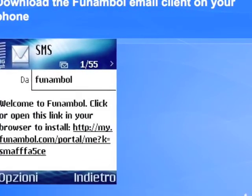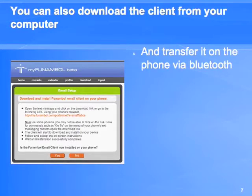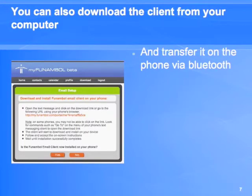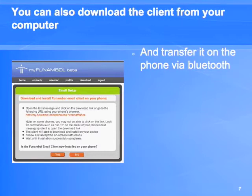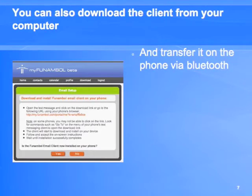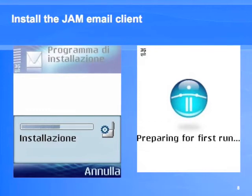If you don't receive the SMS or if you prefer to download the client through the desktop computer, the portal will show you how to do that and you can later send the jar package via Bluetooth to the phone. Once the Funamble email client is transferred on the phone you can proceed with installation.